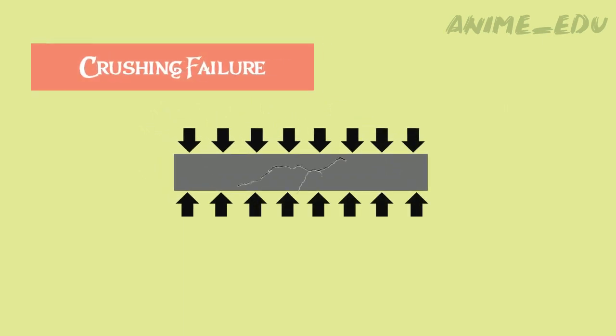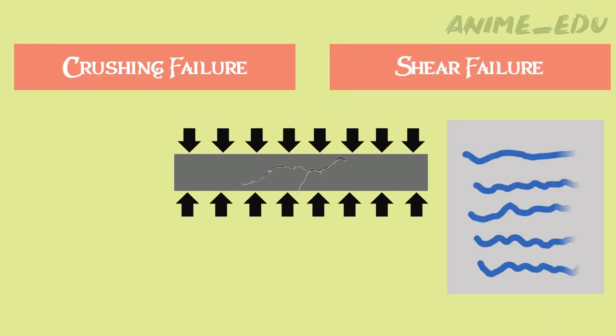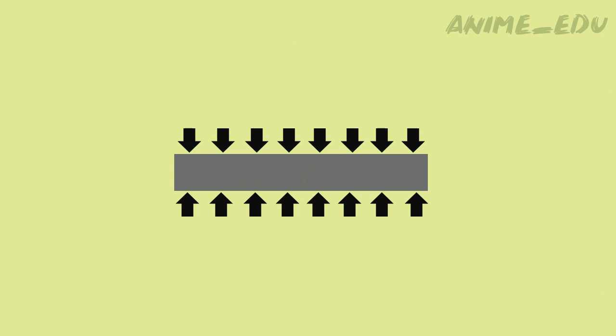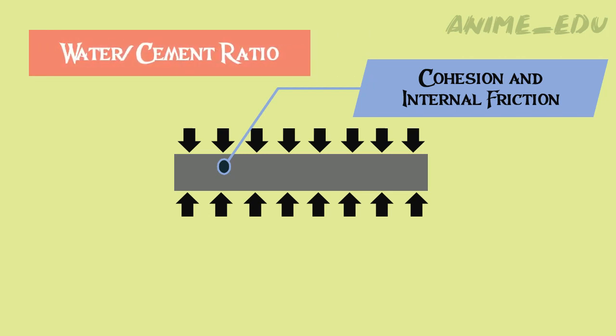When concrete fails under a compressive load, the failure is essentially a mixture of crushing and shear failures. However, the mechanics of failure is a complex phenomenon. In general, the concrete in resisting failure generates both cohesion and internal friction. This cohesion and internal friction are related to a single parameter called the water-cement ratio.